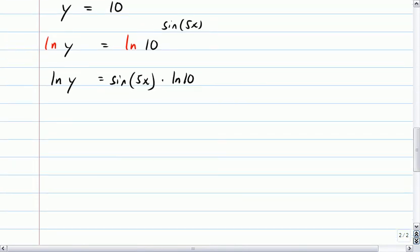So now, sure, now I can take the derivative of the left side and the right side. The derivative of the natural log of y with respect to x is 1 over y times y prime.